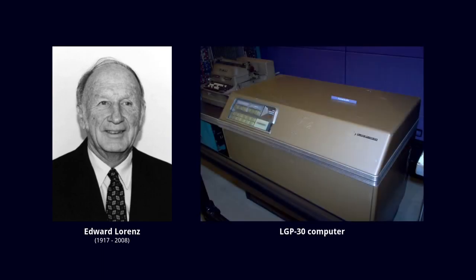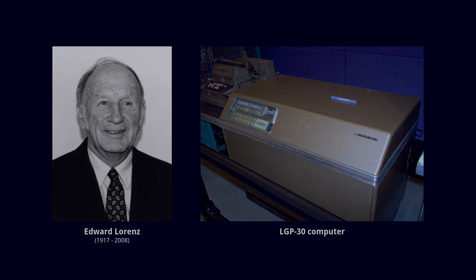In the early 1960s, Edward Lorenz, a meteorologist, was using an LGP30 computer to forecast weather patterns using a number of variables like temperature, wind speed, and pressure. When his program was run, it generated a printout of the predicted numbers.